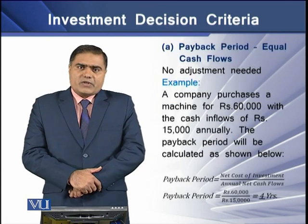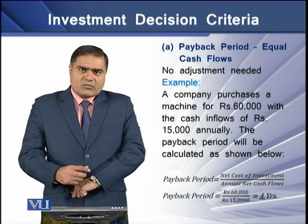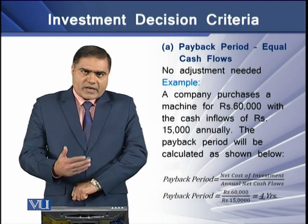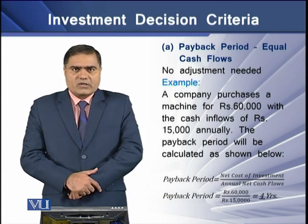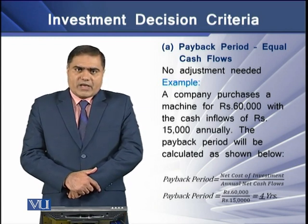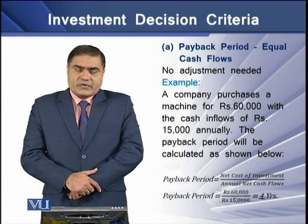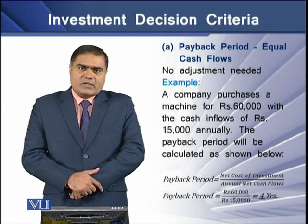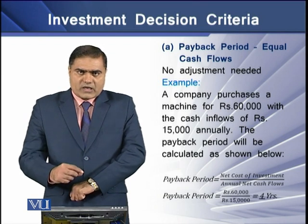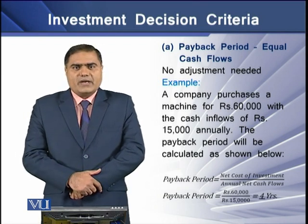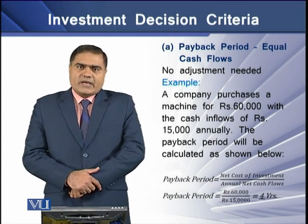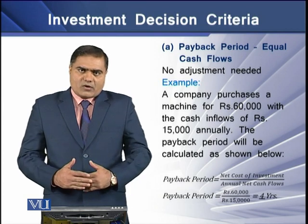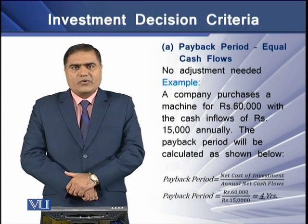If we have equal cash inflows, like in the form of an annuity, the payback period can simply be computed by dividing the investment over the annual inflows. For example, with an initial investment of Rs. 60,000 and annual cash inflows of Rs. 15,000, dividing 60,000 by 15,000 gives 4. This means the payback period on this project is 4 years.